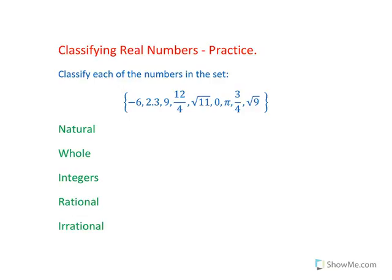Natural numbers are numbers that you can count. Whole numbers are natural numbers plus zero. Integers are whole numbers plus their opposites. Irrational numbers are numbers that you can't write as a repeating decimal or a terminating decimal, and rational numbers would be anything that's not irrational.